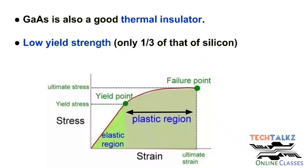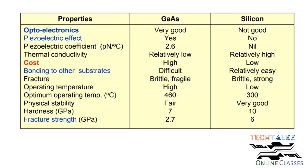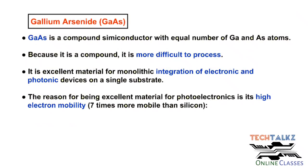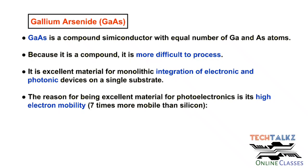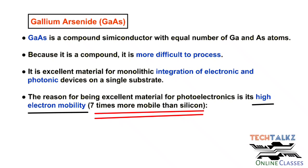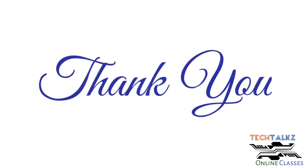The yield point marks where permanent deformation — the plastic region — begins. The elasticity limit extends up to the yield point, and the corresponding stress is the yield strength. Gallium arsenide's yield strength comparison with silicon is shown in the table, and this is an important point to note.